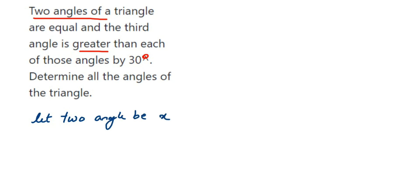Then the third angle, they have given third angle is 30 degrees greater than the other two, which means 30 degrees plus x. So the two angles be x and x because there are two angles and they both are equal.